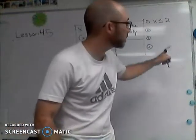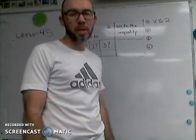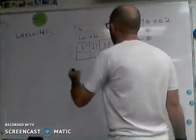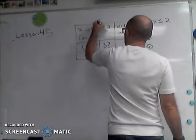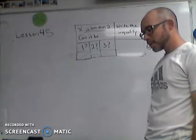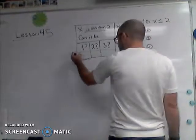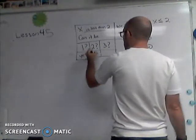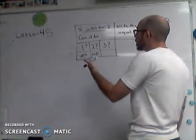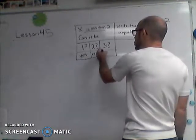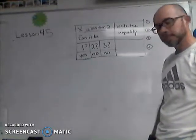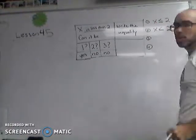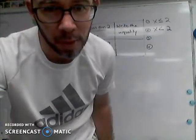'At most two' means x can be two and it can be less than two, so we write x ≤ 2. Next: 'x is less than two.' Can x be one? Yes — one is less than two. Can x be two? No — two is not less than two. Can x be three? No. So that's yes, no, no, and we write x < 2.